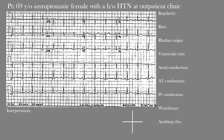First, what is the regularity of this rhythm? On first impression, the rhythm appears quite regular — in fact, this is a regular rhythm. One of the easiest ways to confirm this is to look at the R-to-R intervals. We want those intervals between each R wave to be the same. If you were to get your calipers out or a piece of paper, you'd notice all these intervals are pretty much the same throughout, so we call this a regular rhythm.